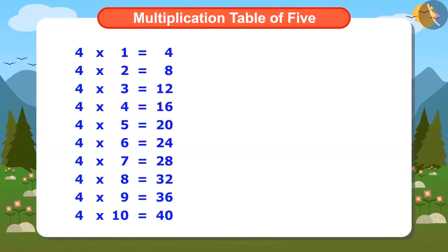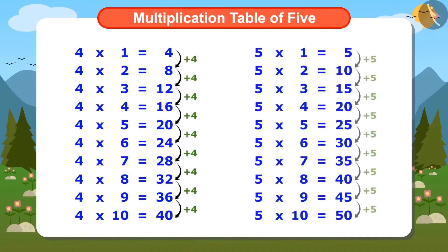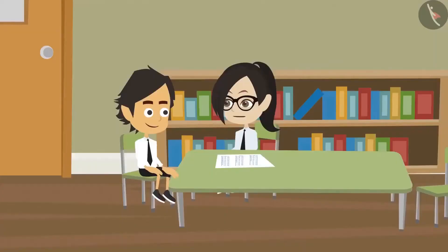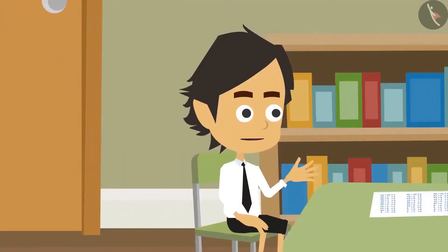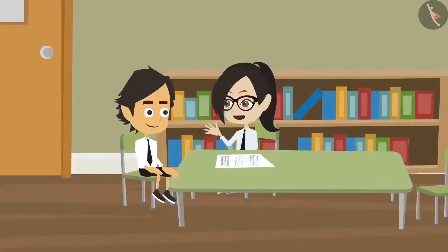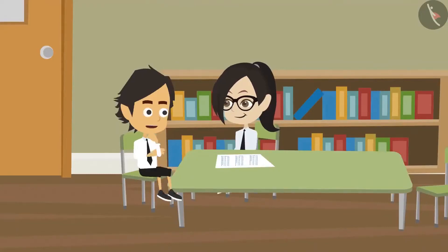The multiplication table of 4 is written by adding 4 repeatedly. In the same way, the multiplication table of 5 is written by adding 5 repeatedly. But I use the multiplication tables of 2 and 3 to write the table of 5. How do you write the multiplication table of 5 with the help of tables of 2 and 3? Let me show you.